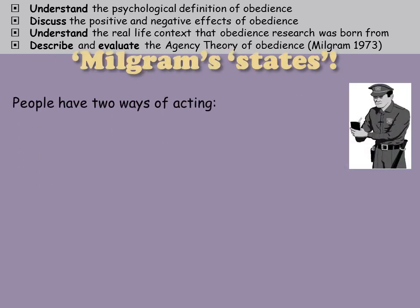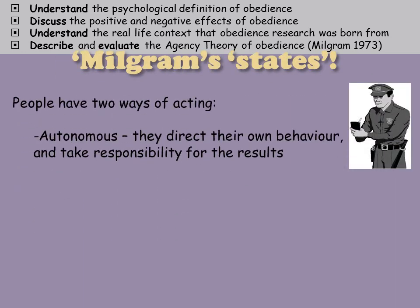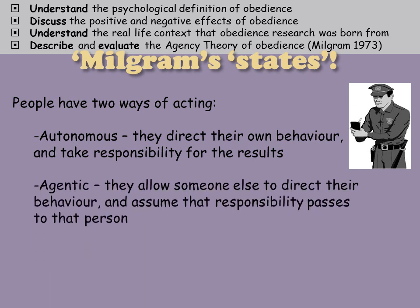Milgram's agency theory suggests there are two states. The first is the autonomous state, in which a person directs their own behavior. They choose how they want to act, they don't follow an authority figure, and they take responsibility for their own actions at all times.